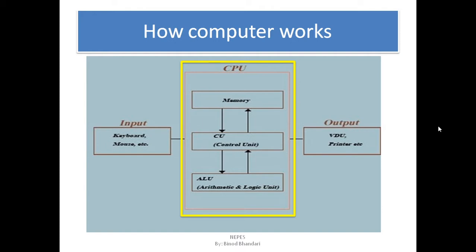In the central processing unit there are three units: one is the memory unit, next is the control unit, and arithmetic and logic unit. Inside the CPU, these memories are the registers. The registers are made up of millions of capacitors, and these capacitors are responsible for holding charges in the form of 0 and 1. Every instruction and command taken from the input devices is translated into machine code and saved in the registers in the form of 0 and 1.